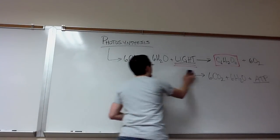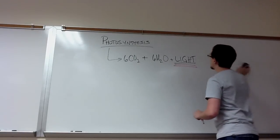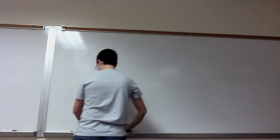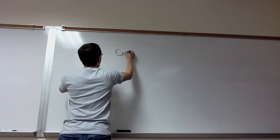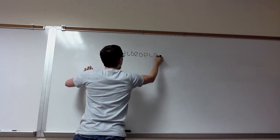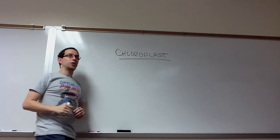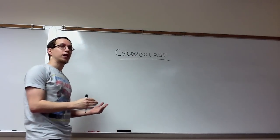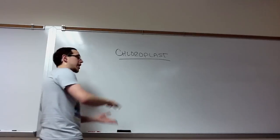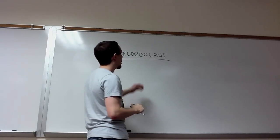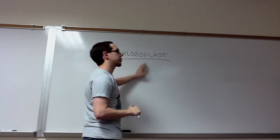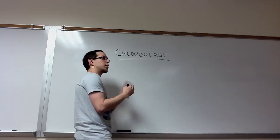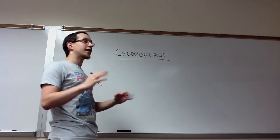The first thing we need to talk about in photosynthesis is the chloroplast organelle. You learned extensively about this in lecture. Both the light-dependent and light-independent reactions take place in the chloroplast. The light-dependent reactions take place in the thylakoid discs, which are stacked into grana. The light-independent reaction, or the Calvin cycle, takes place in the stroma, that dense fluid surrounding those thylakoid discs.